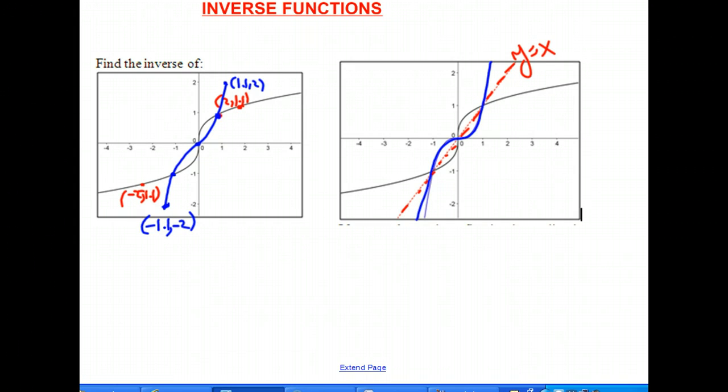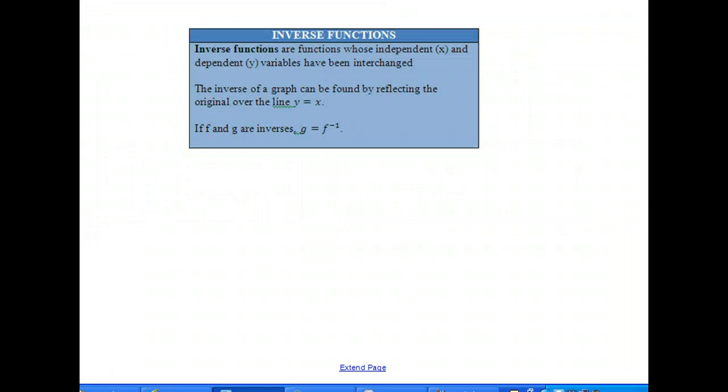And every single x and y value on the original function, if you swap those x and y's, you're going to get a point on the inverse function, which is that blue line. So let's summarize what we found. Inverse functions are functions whose independent variable x and dependent variable y have been interchanged or swapped. The inverse of a graph of a function can be found by reflecting the original over the line y equals x, which is what we just did. And if f and g are inverses, then we use this notation with a little negative one up there to indicate that g is actually the inverse function of f.